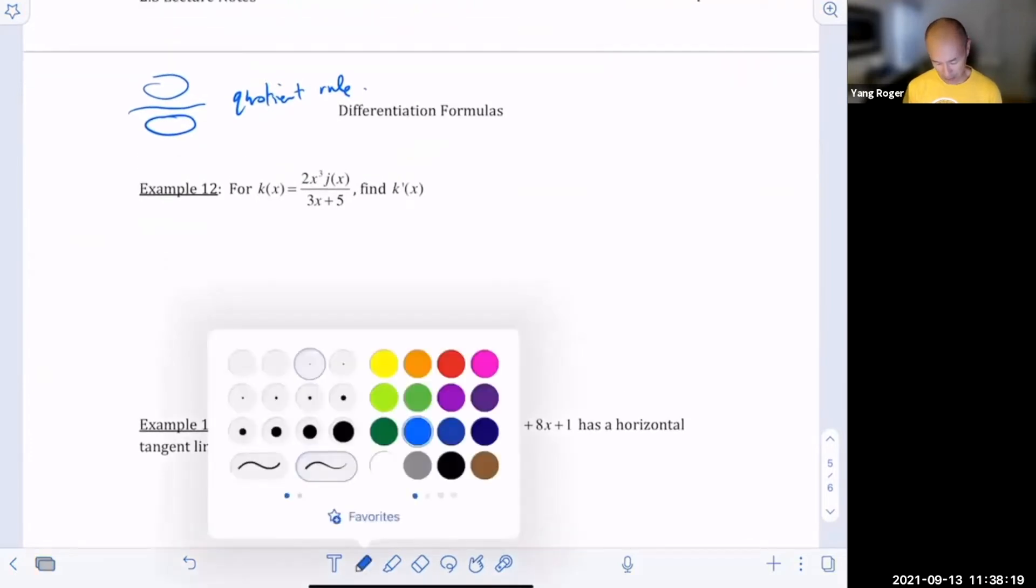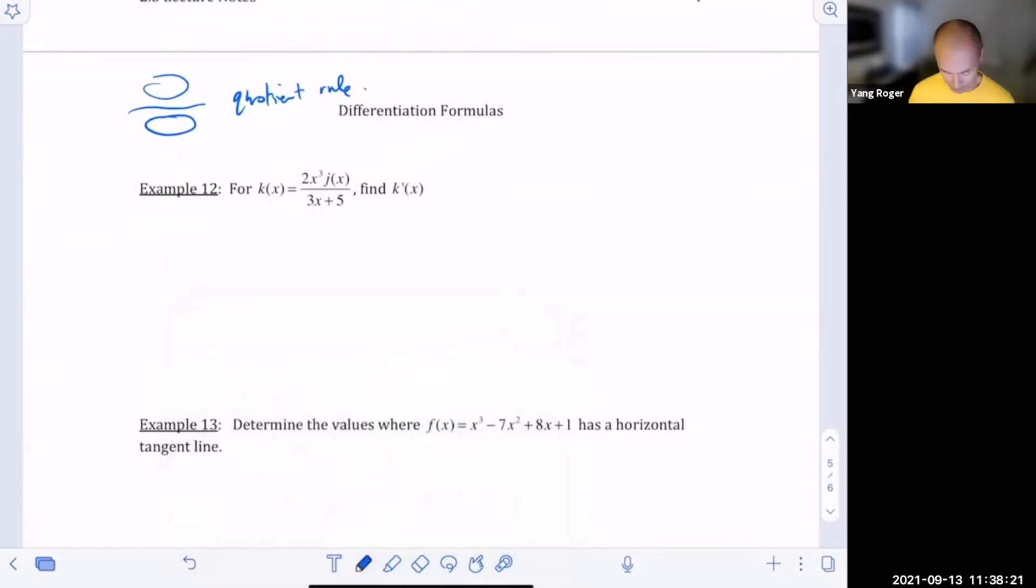So let's write this out. So this would be our k prime of x. That's going to be the derivative of the top thing, 2x cubed j(x) times the bottom thing, so let's put square brackets around this, times the bottom thing, which is 3x plus 5, minus the derivative of the bottom thing.